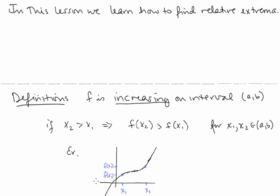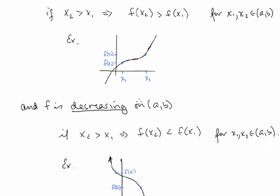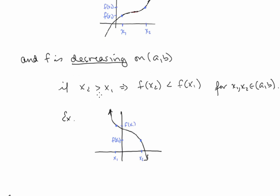Let's first take a look at a couple more definitions. f is increasing on an interval (a, b) if x₂ > x₁ implies f(x₂) > f(x₁) for all x₁ and x₂ in the interval — meaning the y values increase as the x values increase. Similarly, f is decreasing on (a, b) if x₂ > x₁ implies f(x₂) < f(x₁), so as the x values increase, the y values are decreasing.